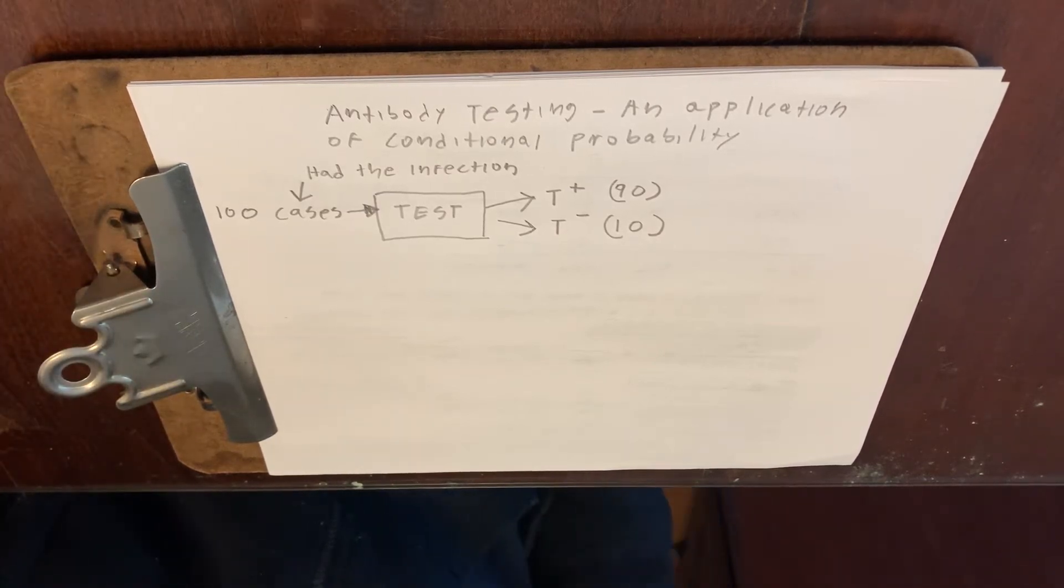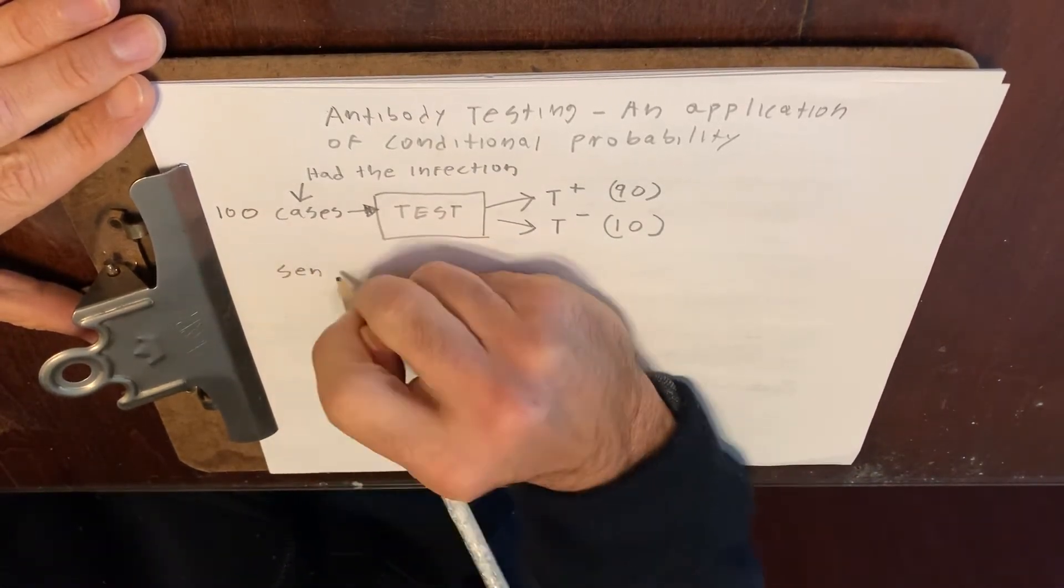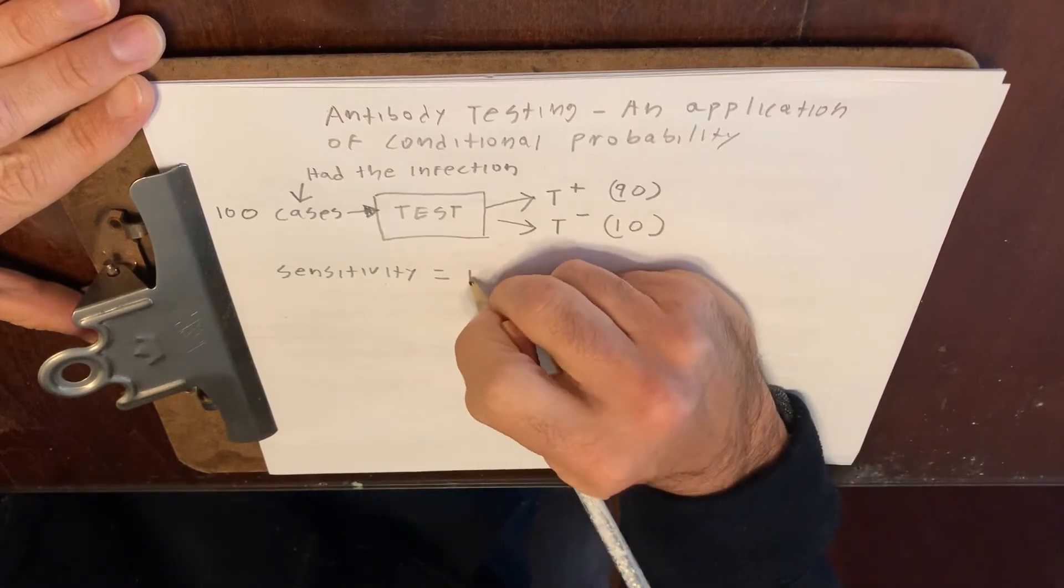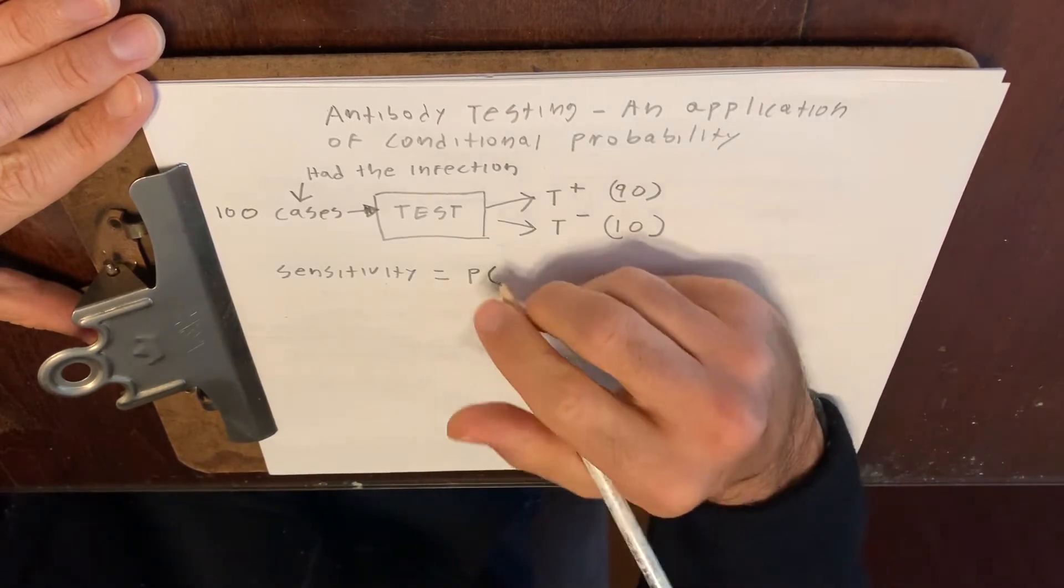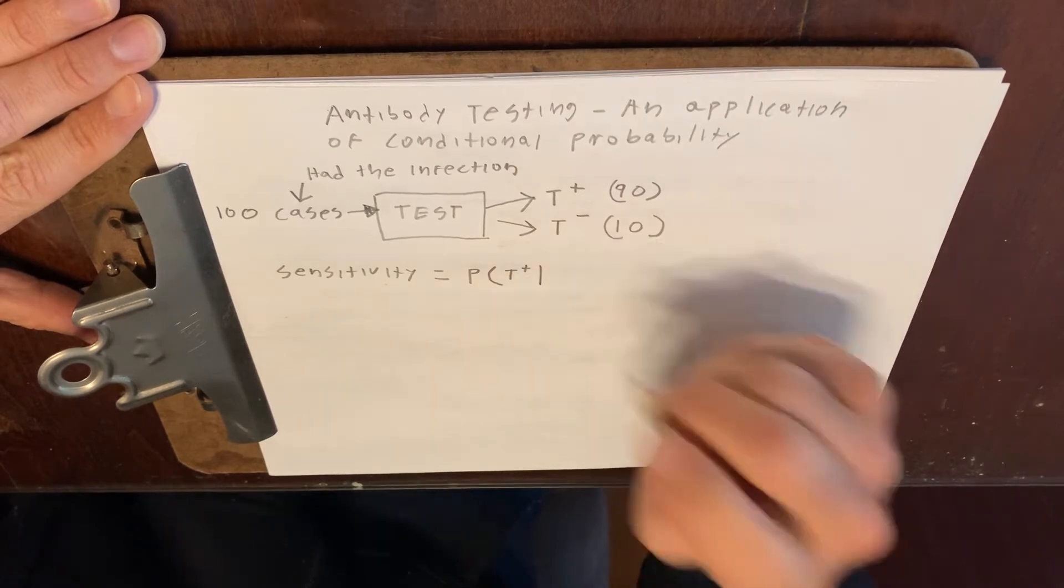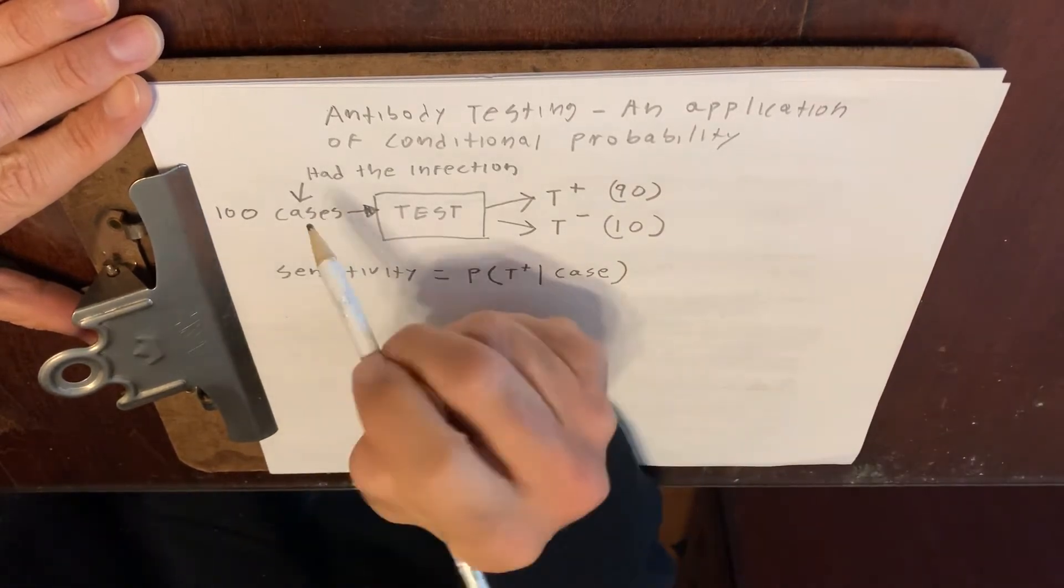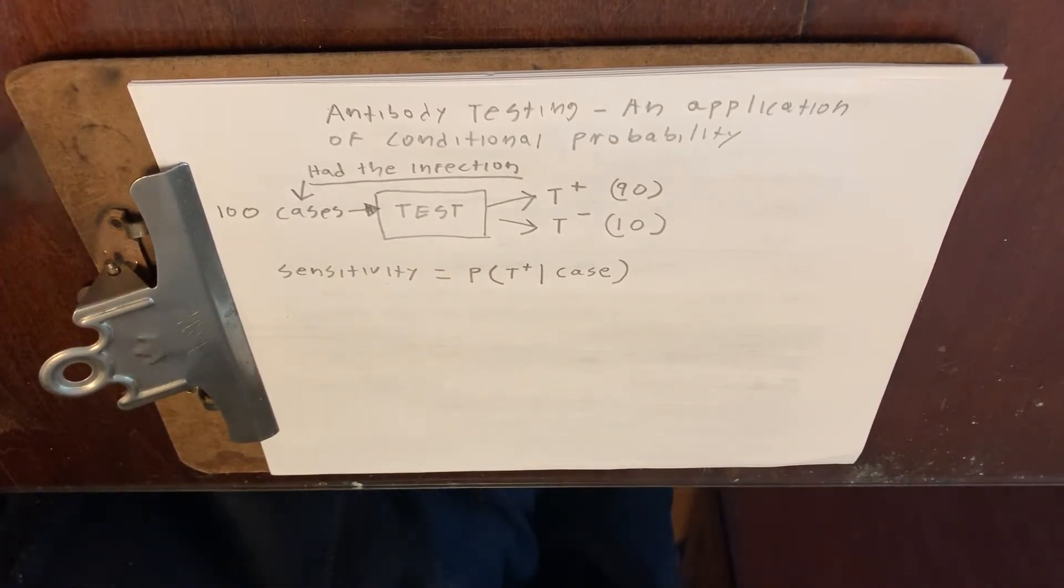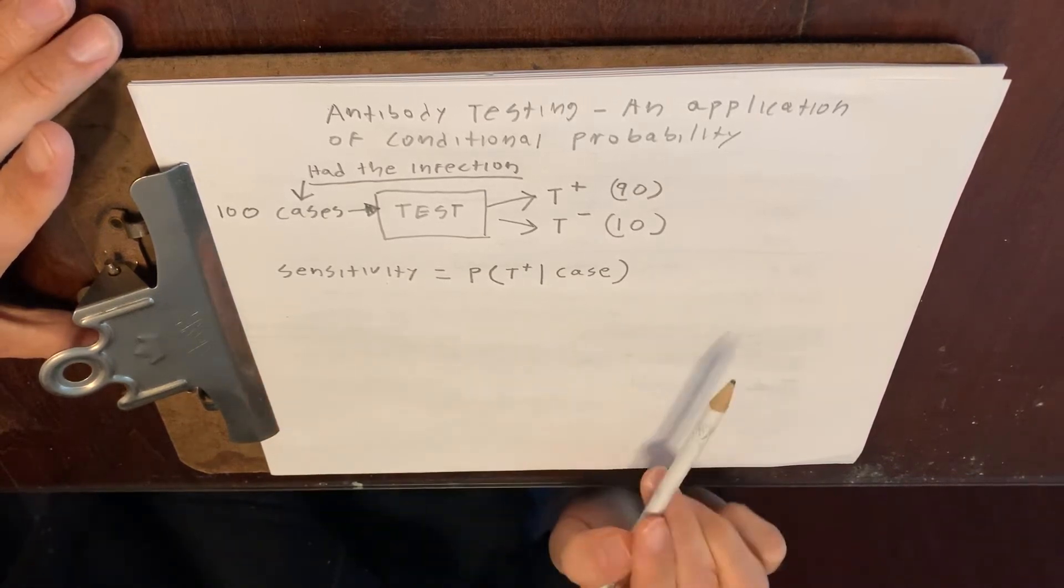So in medical science, we have a term called sensitivity. Sensitivity is the probability, the conditional probability, that you will get a positive test result given that the actual person taking the test is a case. In other words, given that they have actually had the infection. This is an important idea that takes college statistics and puts it right into the real world, which is sort of beautiful, right? This is the actual college level definition of what sensitivity is.